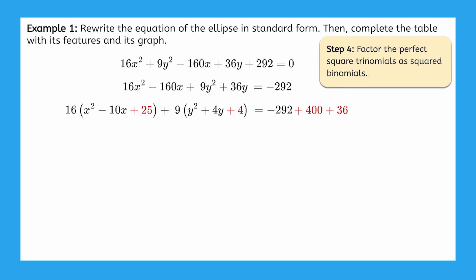Now, let's factor these perfect square trinomials as squared binomials. The first square is just the result of x minus 5 times x minus 5, so we can write it as x minus 5 squared.